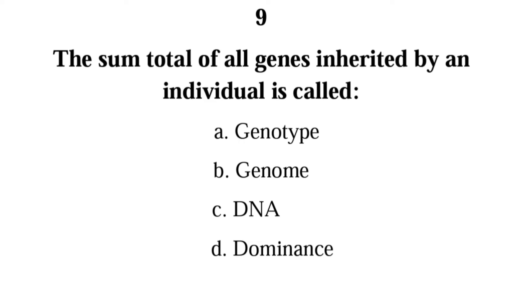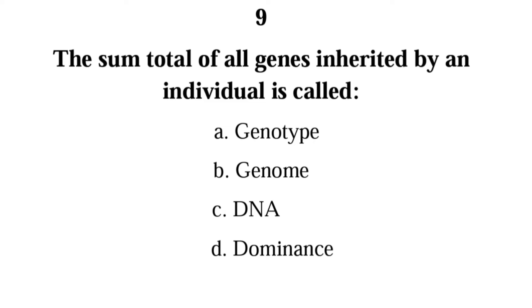Number nine: the sum total of all genes inherited by an individual is called — genotype, genome, DNA, or dominance. The correct answer is genotype. Genotype refers to all the genes inherited from your parents — both the dominant and recessive genes, both the genes that are expressed and the genes that are not expressed.